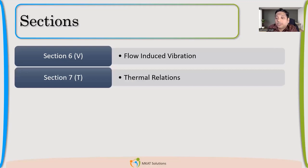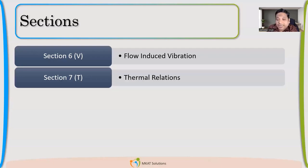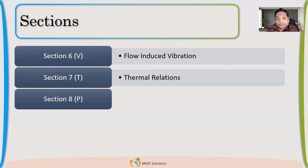Section seven talks about thermal relations — problems related to heat transfer. It covers how to calculate LMTD, which is used for Q (heat transfer) calculation. You'll also find fouling and the effect of fouling on heat transfer, with lots of charts given. It is mainly used by thermal engineers who are designing and sizing the heat exchanger to provide us the input.